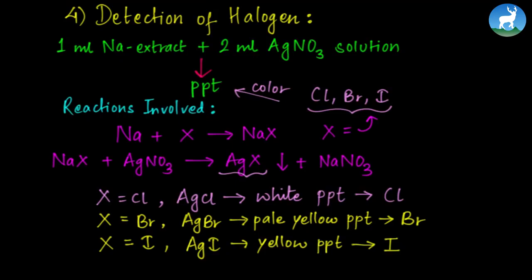Using Lassaigne's test, we can determine nitrogen, sulfur, and halogens in an organic compound.